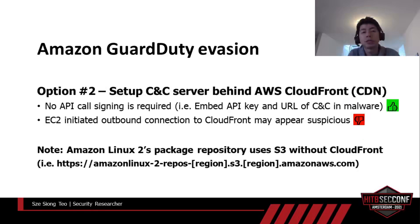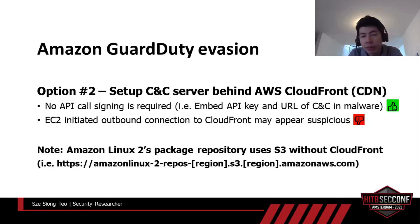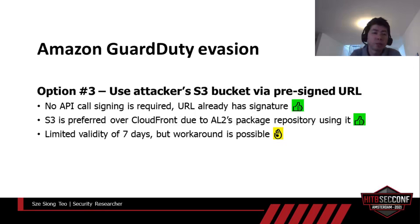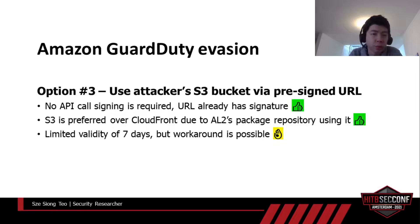The second option is to set up the C&C server hiding behind Amazon CloudFront CDN. This method does not require signing the request, but the chances of getting detected by GuardDuty are unknown — I've only done limited tests and GuardDuty did not detect it. However, we don't know if GuardDuty might start flagging outgoing connections from EC2 to CloudFront in the future. Amazon Linux 2's YUM repository is hosted on S3 directly, so S3 would be a more trusted service than CloudFront. The third option is to use the attacker's S3 bucket with a pre-signed URL. This method does not require signing the request either, and S3 is preferred since Amazon Linux 2's package repo uses it. Although S3 pre-signed URLs have limited validity, we can work around that. This is the most preferred option among the three.